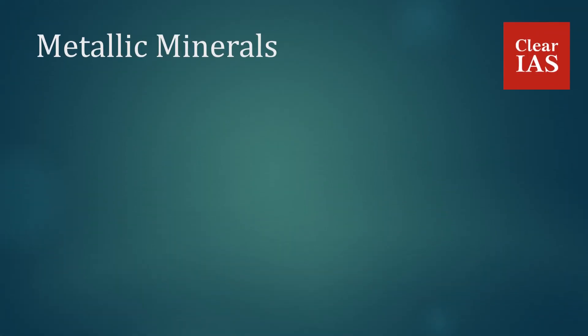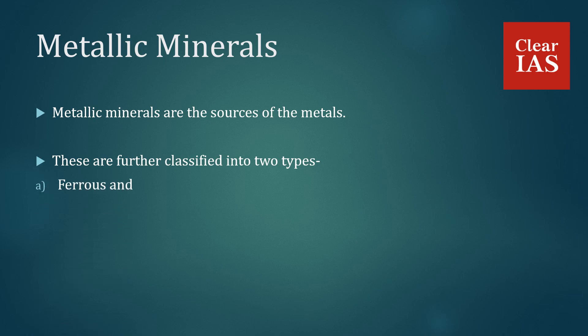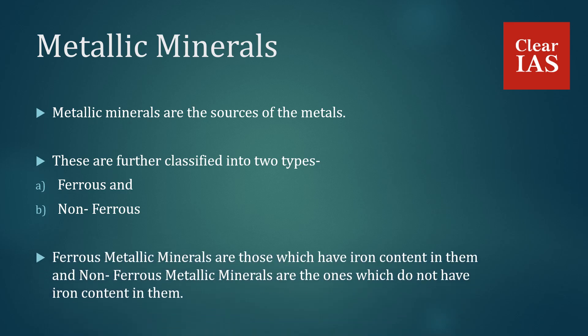Metallic minerals are the sources of metals. These are further classified into two types: ferrous and non-ferrous. As the names indicate, ferrous metallic minerals are those which have iron content in them, and non-ferrous metallic minerals are the ones which do not have iron content in them.